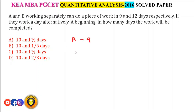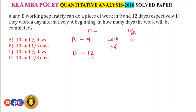A and B working separately can do a piece of work in 9 and 12 days respectively. Taking LCM of 9 and 12 = 36 as total work. Efficiency of A = 36/9 = 4 units per day. Efficiency of B = 36/12 = 3 units per day. If they work alternatively with A beginning, we need to find how many days the work is completed.